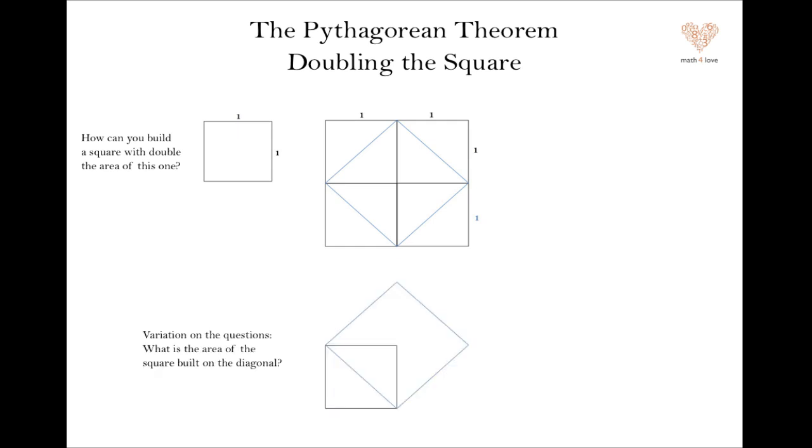You could vary this question and just notice that the blue square that you've built is the square that is on the diagonal of the starting square. So you could ask this question, what is the area of that square built on the diagonal? And we already know that it's twice the area of the starting square and we can see this another way by cutting it up into triangles. Each triangle is half of the one by one square. Two of them make the one by one square. Four of them make the blue square. So the blue square must be twice the area of the original one by one square.